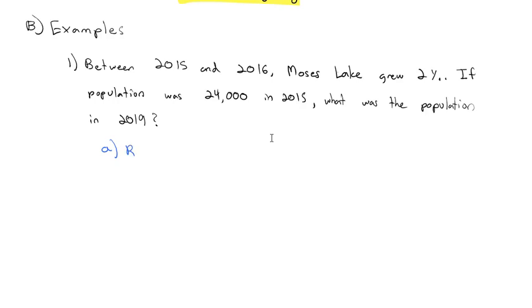We could represent this with a recursive formula. The recursive formula starts with P sub 0, the initial value, which is 24,000 people. Then P sub n says we're going to multiply the previous term by 1 plus the growth rate. The growth rate is 2%, which is 0.02 as a decimal. That becomes our common ratio times the previous term P sub n minus 1.